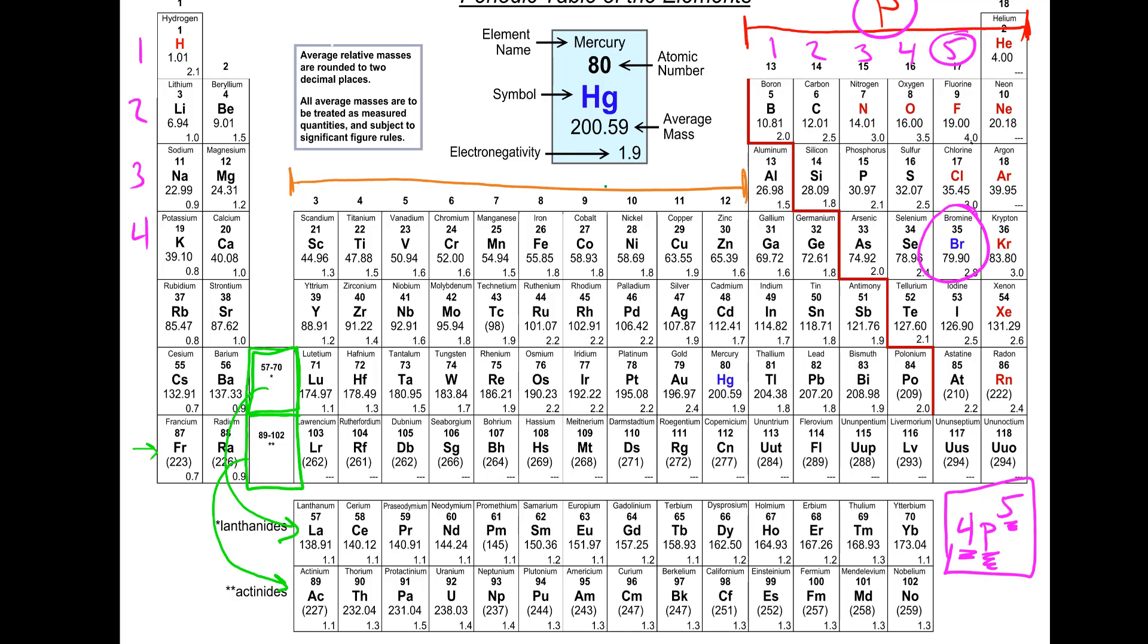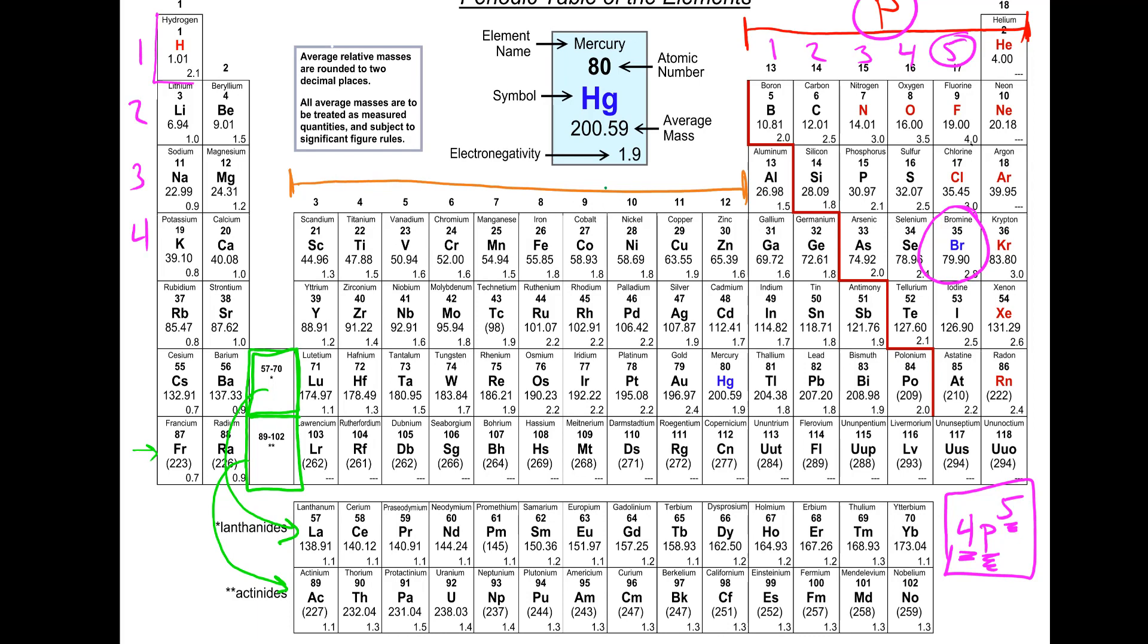The other way the periodic table guides us is that if we read it like a book, then it's going to guide us into the order of the orbitals in our configuration. So here we have 1s. There's two spaces. Helium's over here, but it can also exist here. So we have 1s, two spaces.